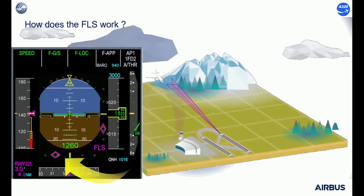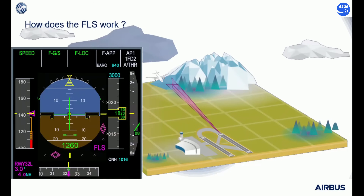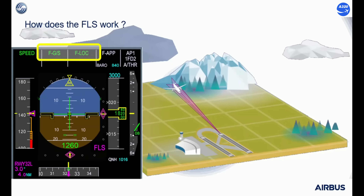The FLS deviations are displayed with double magenta diamonds on the PFD, with the same scales as ILS deviations. The flight guidance system uses the same control laws to guide the aircraft on the FLS virtual beams as it does on ILS beams. The FLS guidance captures and tracks the FLS localizer and FLS glide slope virtual beams with the F-LOC and FGS modes.